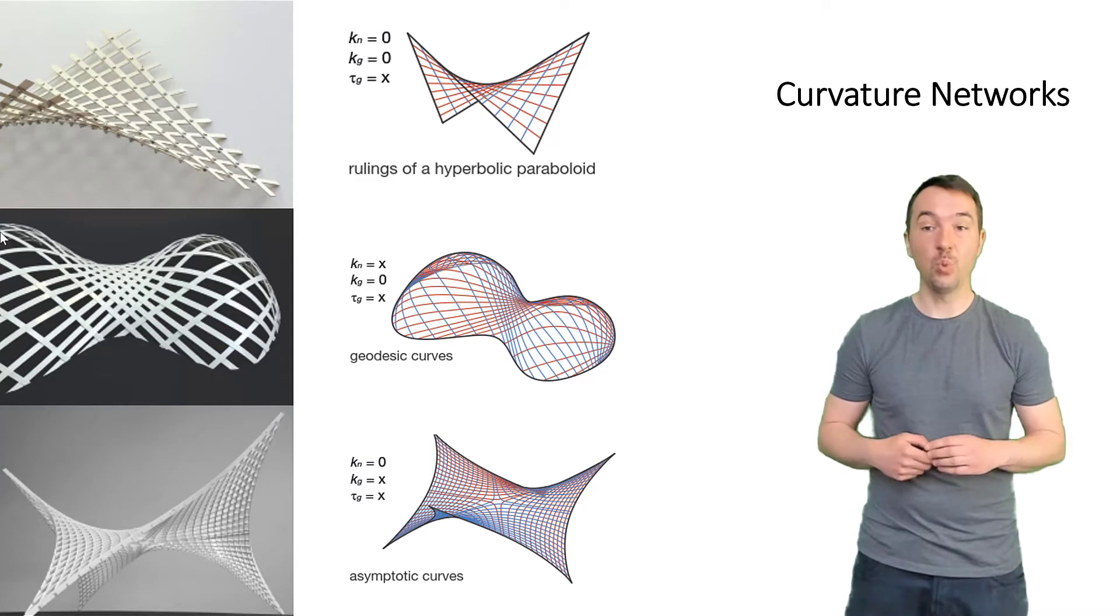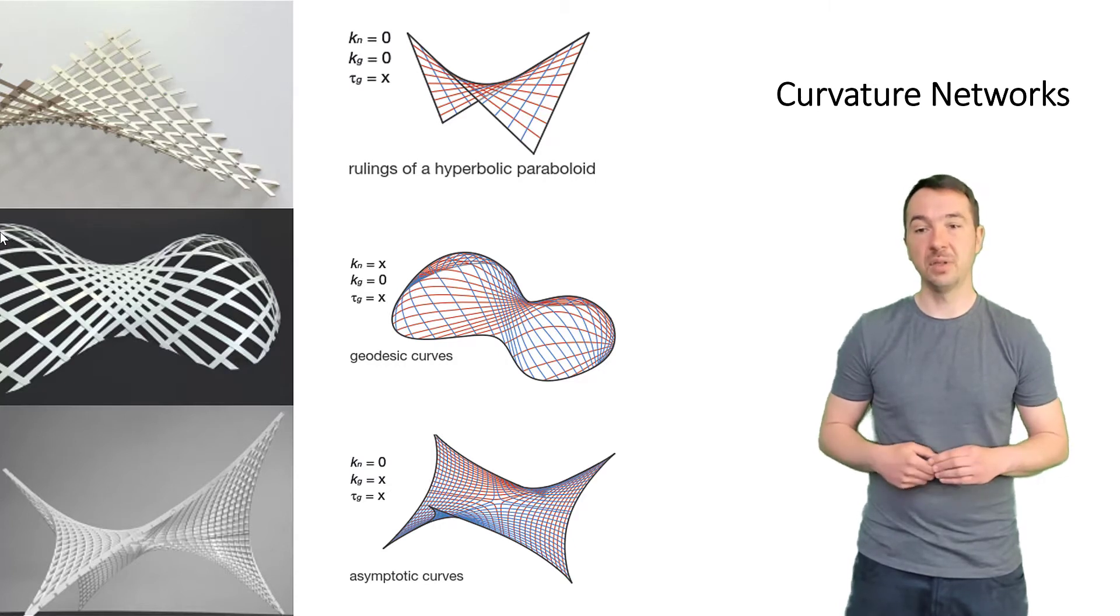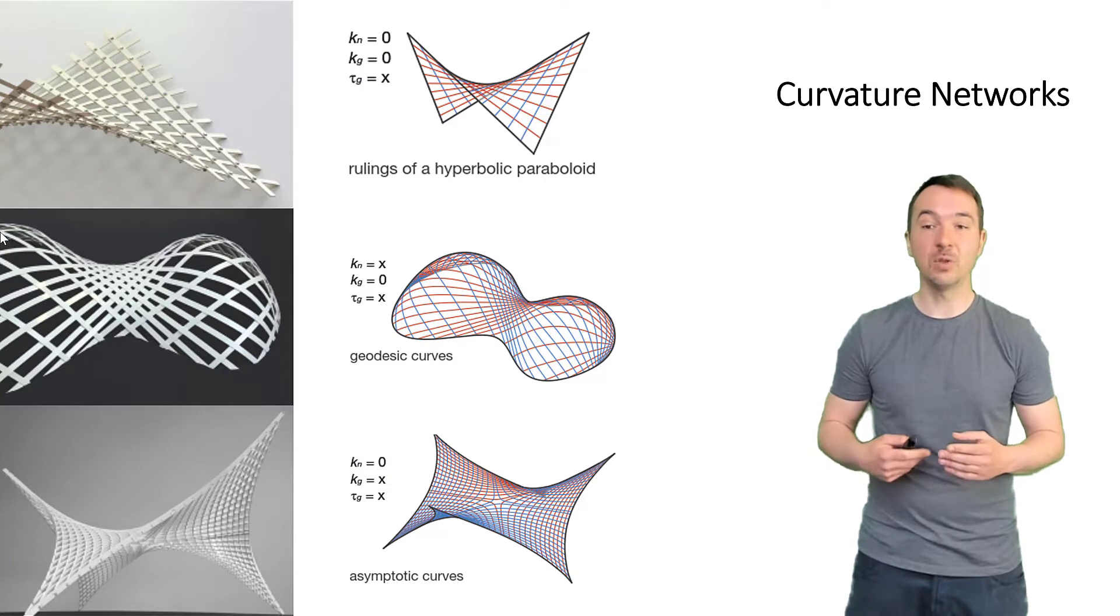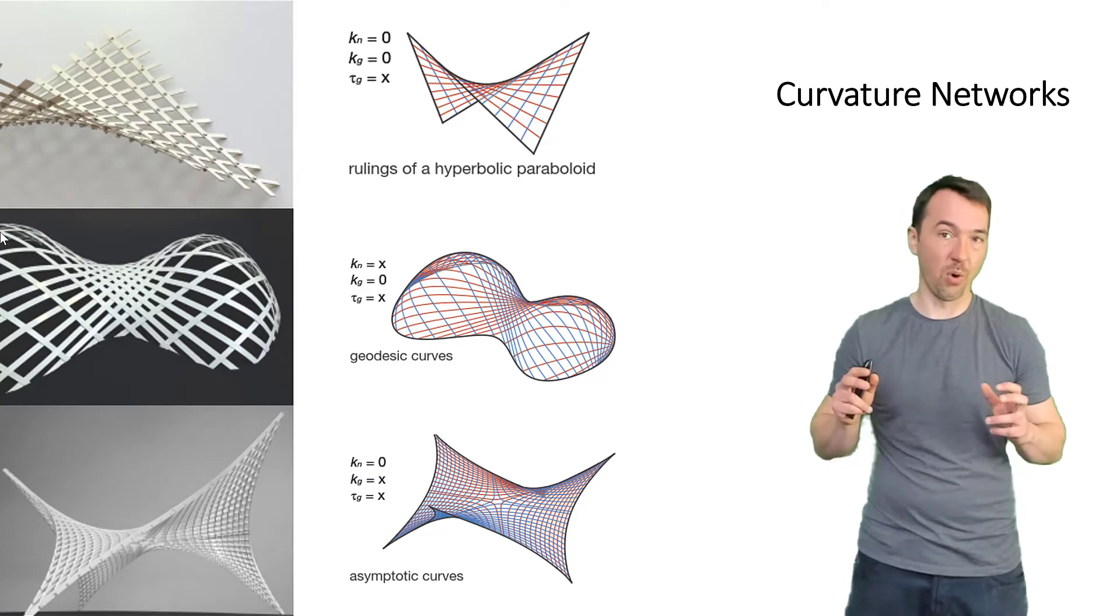The grid mechanisms we investigate are based on geodesic and asymptotic curvature networks. This allows the use of initially straight beams and profiles with at least one non-deformable or strong axis.